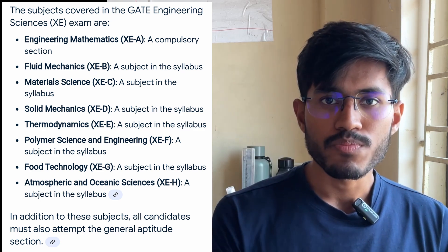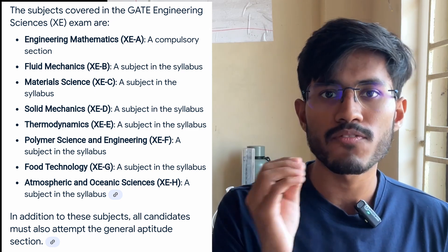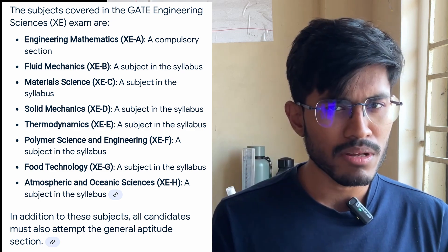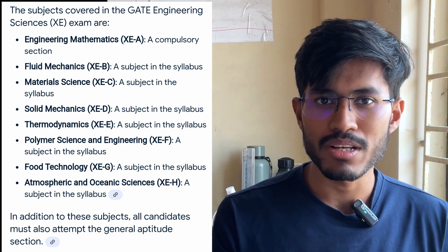If you are from mechanical engineering, you can choose from material science, fluid mechanics, thermodynamics, and solid mechanics. Fluid mechanics includes the fluid machinery part, applied thermodynamics is included in thermodynamics, and solid mechanics includes vibration as well. You only have to prepare for two of these subjects. Each core subject comprises 35 marks — so 35 plus 35 equals 70 — and the remaining 30 marks are divided equally between engineering mathematics and the aptitude part.